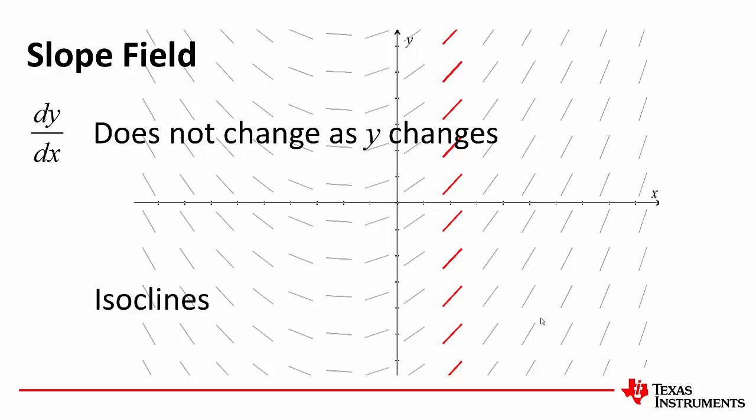We also notice that because all of those lines have the same gradient, they're referred to as isoclines. Iso comes from a Greek word meaning equal. Clines comes from a Greek word meaning slope, so isoclines means equal slope.